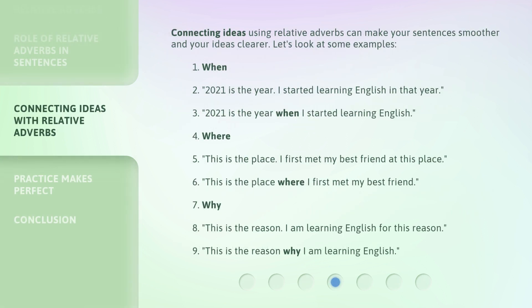Connecting ideas using relative adverbs can make your sentences smoother and your ideas clearer. Let's look at some examples. Using when: '2021 is the year. I started learning English in that year.' Combined with the relative adverb when: '2021 is the year when I started learning English.'